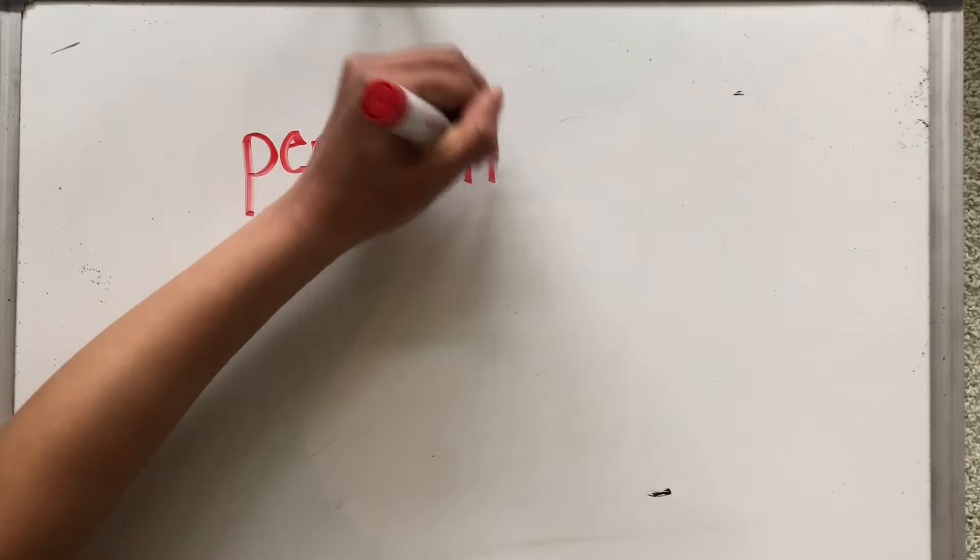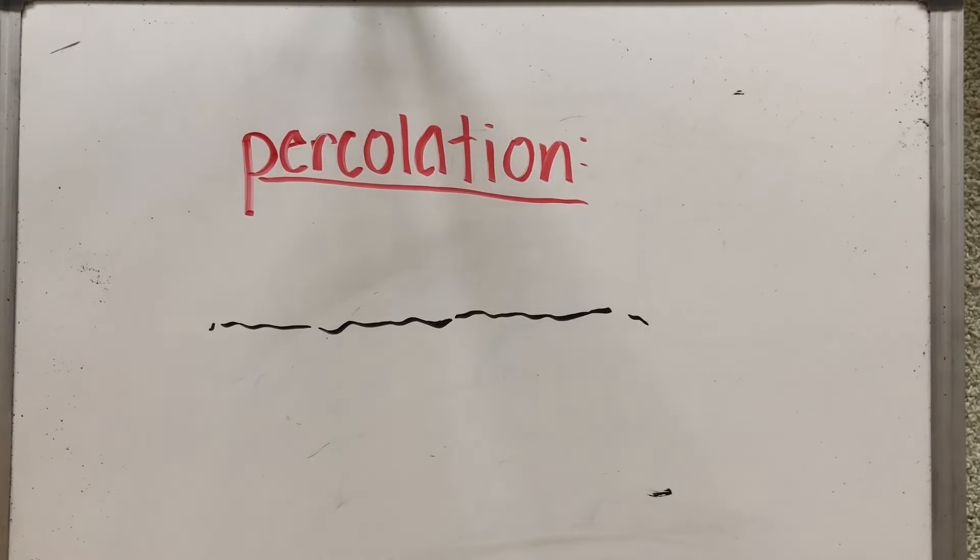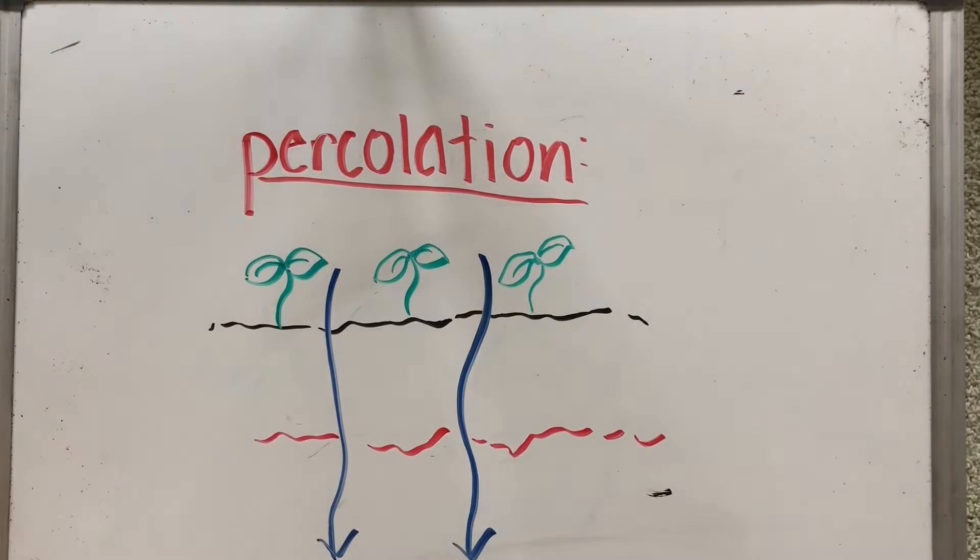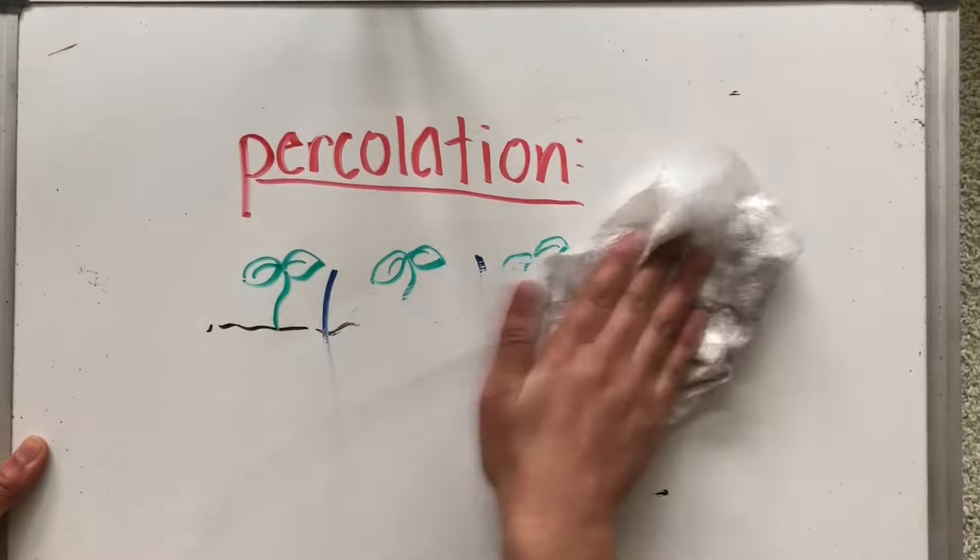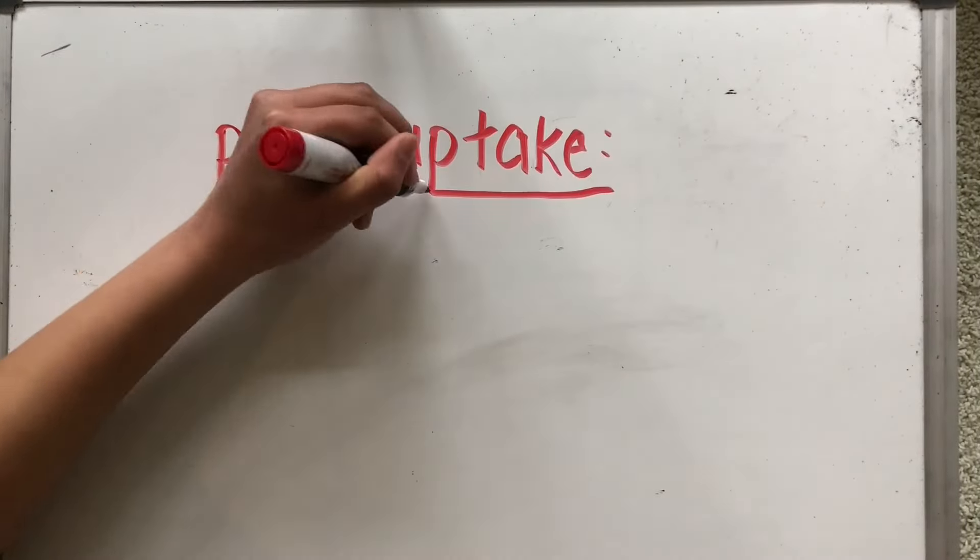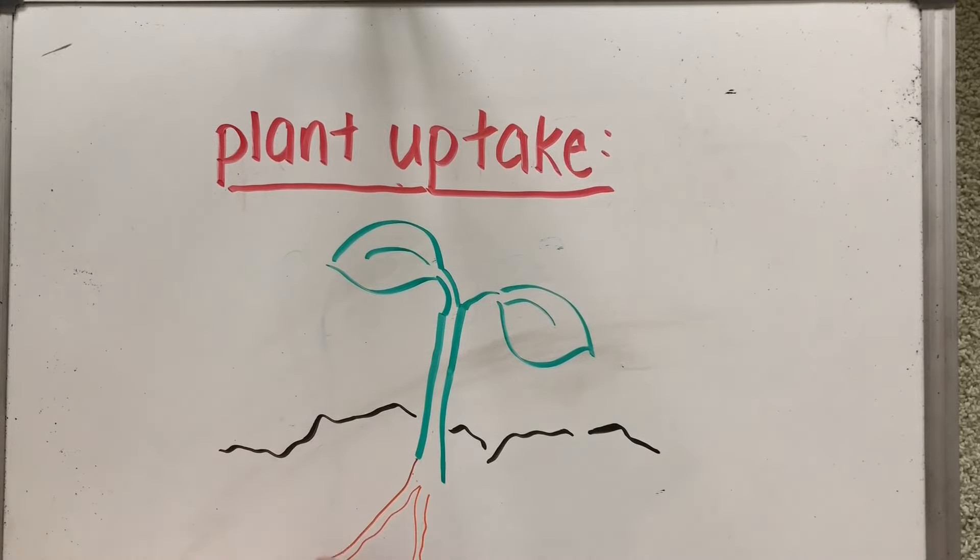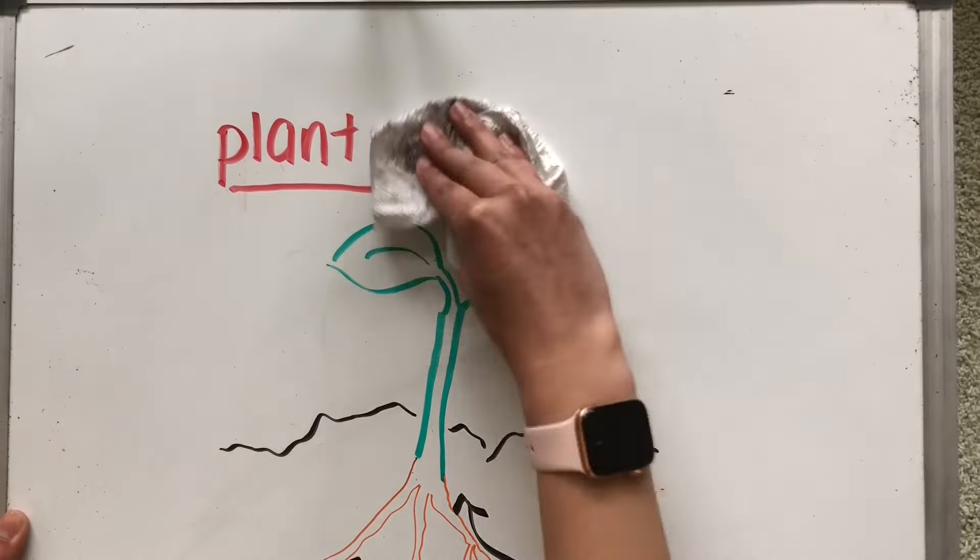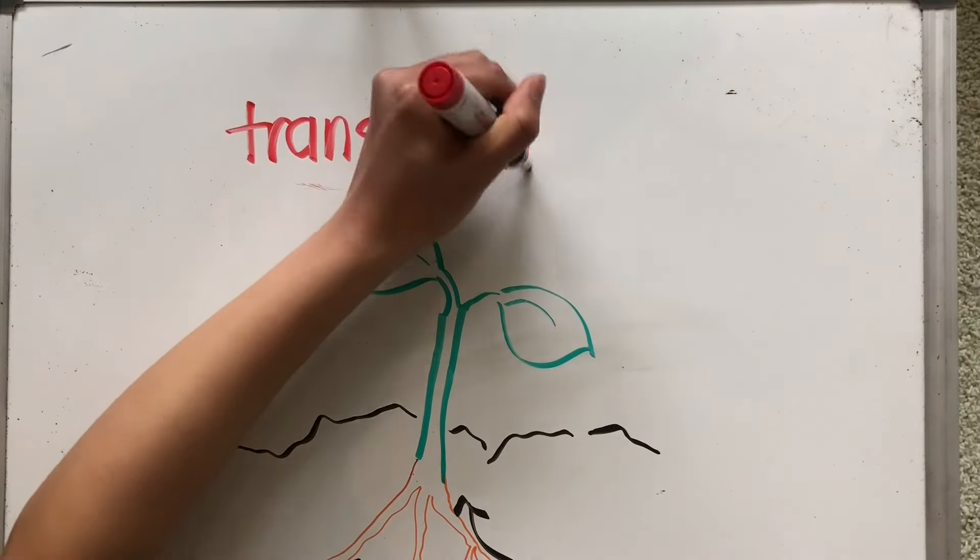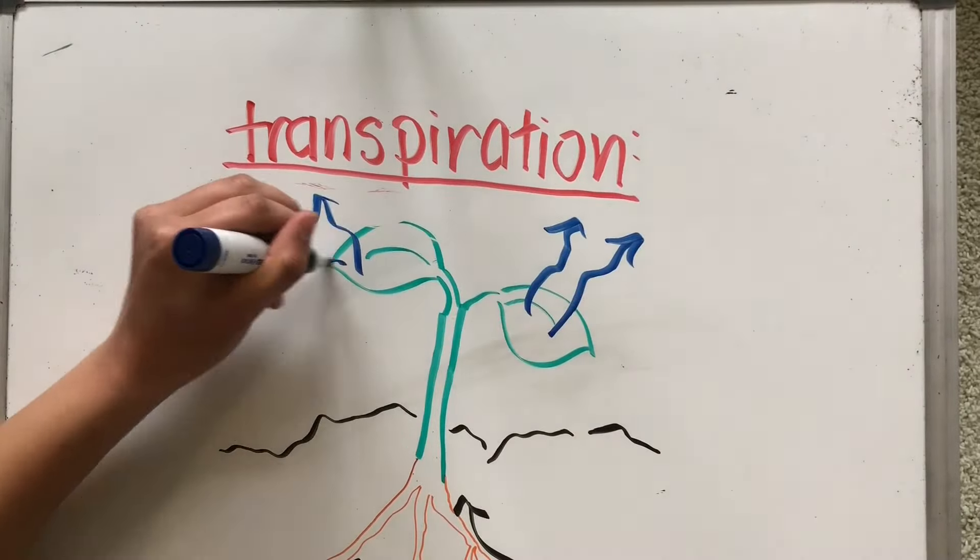Similar to infiltration, percolation is the process by which water flows down through the soil and deep into the rock layer of the Earth. This process allows groundwater to collect in the rock layer. Plants uptake water from the soil, allowing water to move from the soil up to the surface. This water is then released through transpiration, a process in which plants release water back into the atmosphere.